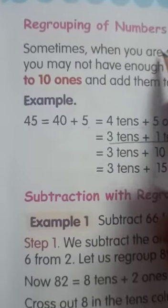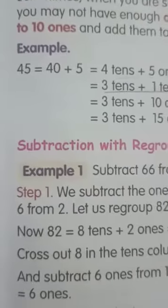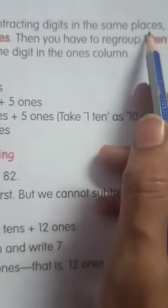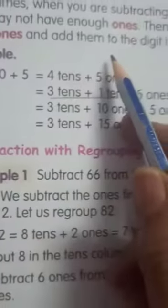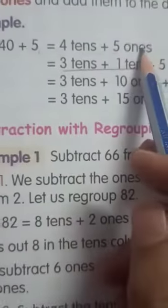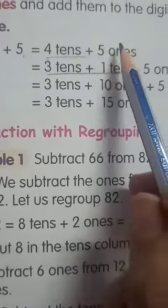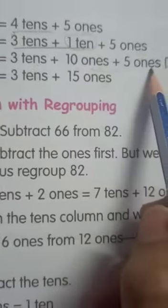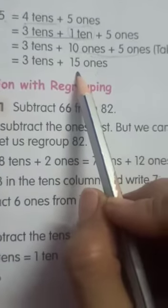Next, here topic is regrouping of numbers. Children, sometimes we don't have enough ones. So what you will do? You have to borrow one ten from the tens place. That is called the regrouping of numbers. Sometimes when you are subtracting digits in the same place, you may not have enough ones. Then you have to regroup one ten to ten ones and add them to the digit in the ones column. So children, this 45 can be written as 40 plus 5, four tens plus five ones. Then for this four tens, we can write as three tens plus one ten. Five ones as it is. Next, write three tens plus this one ten can be written as ten ones plus five ones. Now add the ones, three tens plus fifteen ones. So this is the regrouping of numbers.